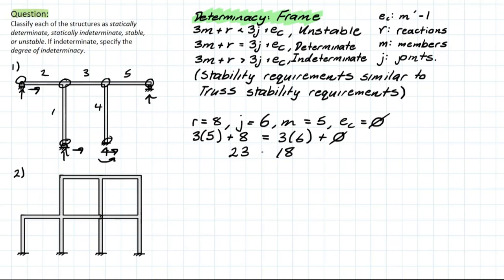Therefore, we can say that this is greater on the left than it is the right. Therefore, we can say that it is indeterminate. And the degree of indeterminacy is going to be 23 minus 18. So 23 minus 18 will equal 5. So the degree of indeterminacy will equal 5.